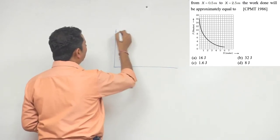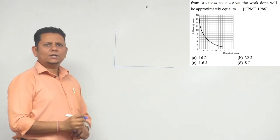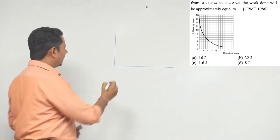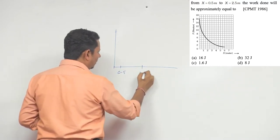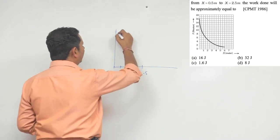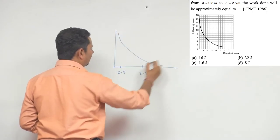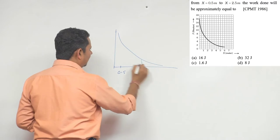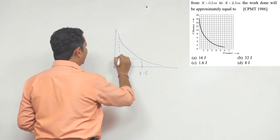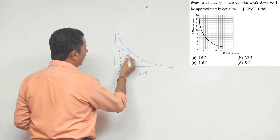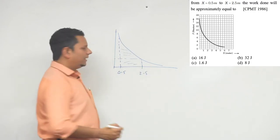So the approach for displacement, the graph area from 0.5 to 2.5 - this work equals the graph area. How will we calculate it? Now, if we look at this graph...